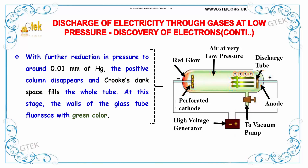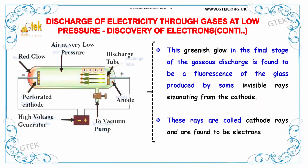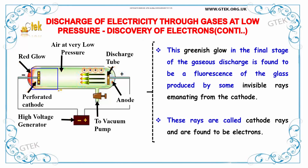With further reduction in pressure to around 0.01 mmHg, the positive column disappears and Crookes' dark space fills the whole tube. At this stage, the walls of the glass tube fluoresce with a green color. This greenish glow is the fluorescence of the glass produced by some invisible rays emanating from the cathode. These rays are called cathode rays and are found to be electrons.